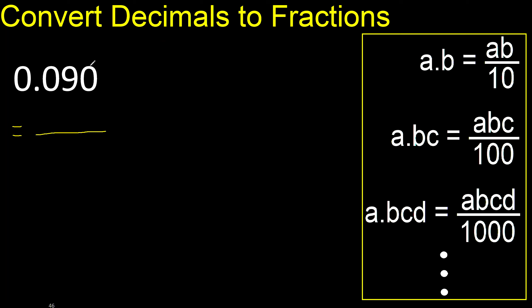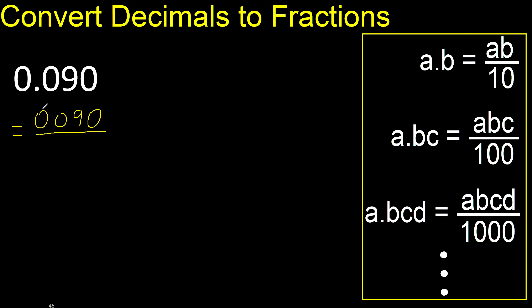First, all the number without the point, like this. Eliminate zero on this side — always number one. After the point there are three numbers, therefore three zeros.